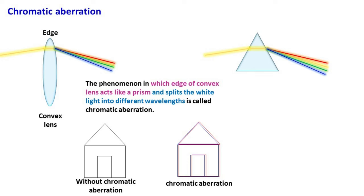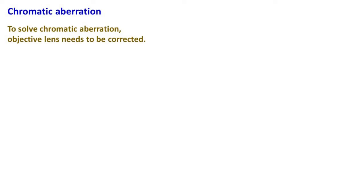The problem of Chromatic Aberration is seen in microscopes as well as optical instruments like refractive telescopes. To get images without Chromatic Aberration, the objective lens has to be corrected.